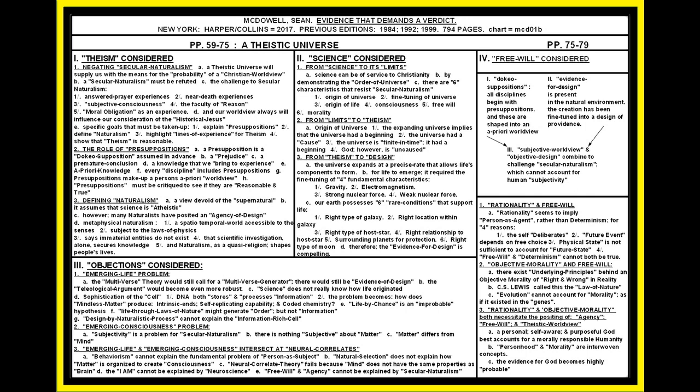From here, let's take a look at block two. We'll take a look at science considered. McDowell says we go from science to examining its limits. Science can be of service to Christianity by just demonstrating the order of the universe. There are six characteristics that resist secular naturalism: the origin of the universe, the fine-tuning of the universe, the origins of life, human consciousness, human free will, and the experience of subjective and objective morality all throw secular naturalism into doubt.